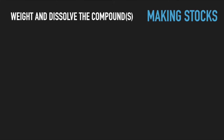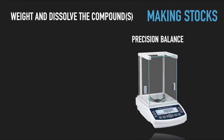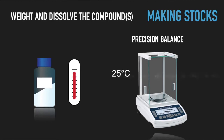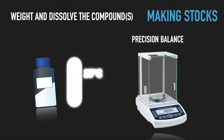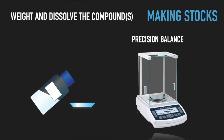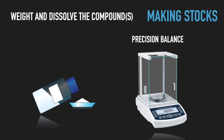To weigh out the required amount of the compound, use laboratory precision balances. To avoid condensation inside dry powders, bring frozen substances to room temperature before weighing. To avoid contamination of pure substances, never return compounds to the original container.